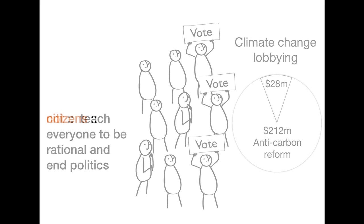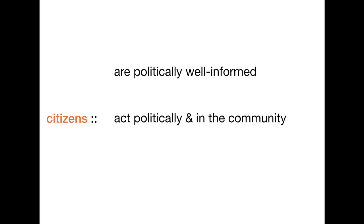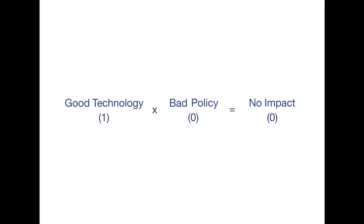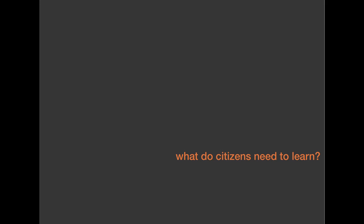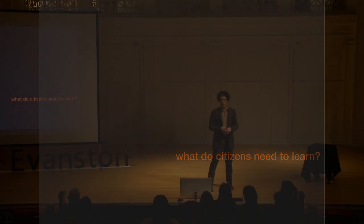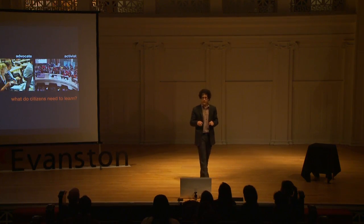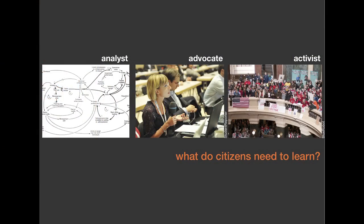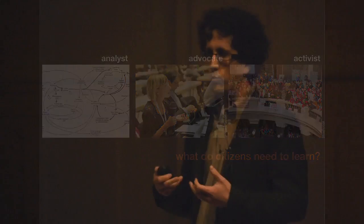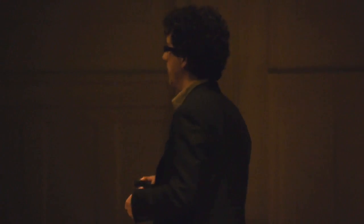So what is civic education? Well, it's generally agreed upon that it means creating citizens that are politically well-informed, can act politically and in the community, and possess civic and moral virtue. So if we want to change this equation, and civic education is the answer, what exactly does it involve? I think it involves three broad sets of abilities: teaching students how to be analysts who can understand evidence and policy, advocates — or rather civic journalists — who can educate and engage the public in policy problems, and activists who can work together with other citizens to demand better policy.